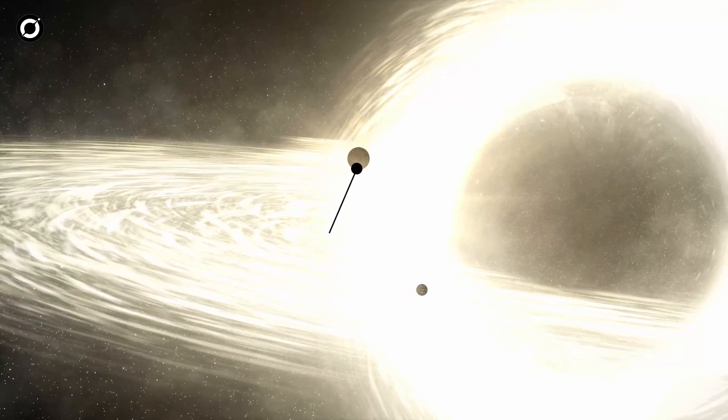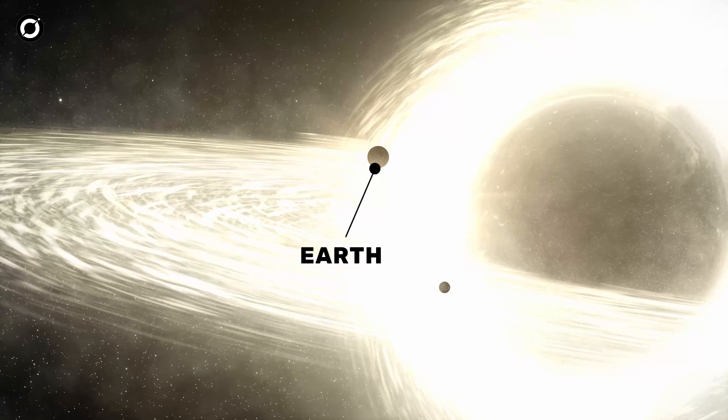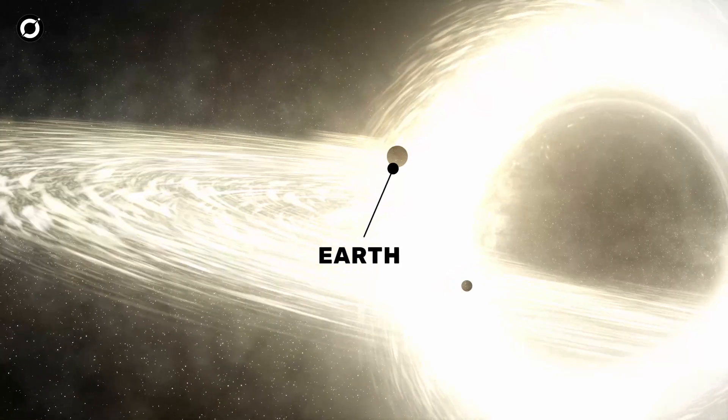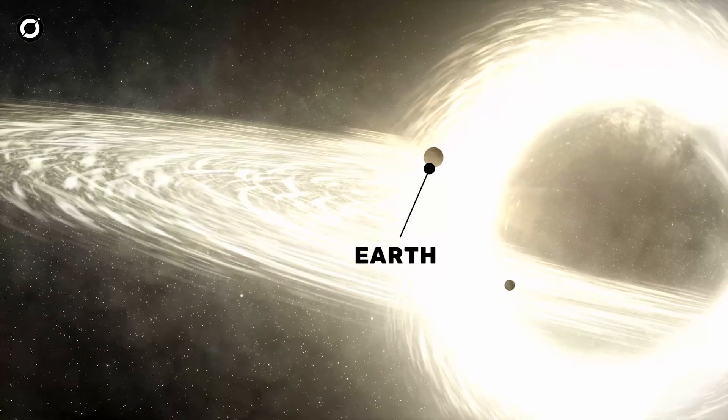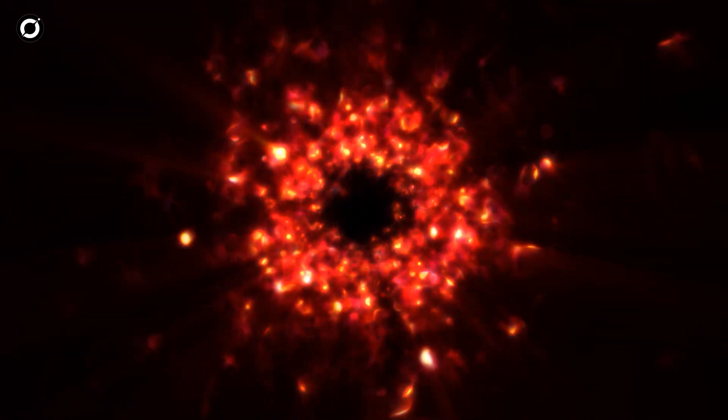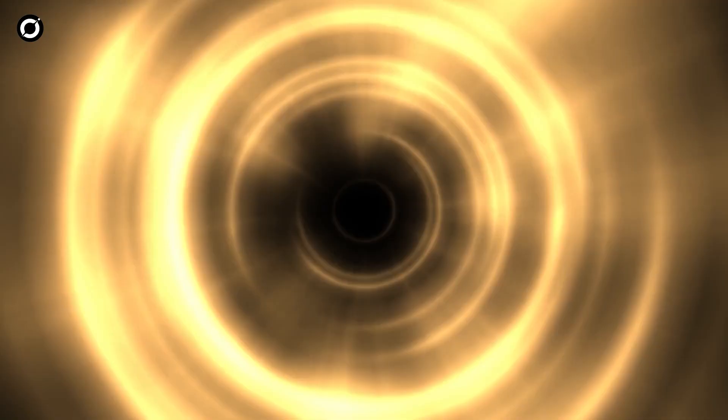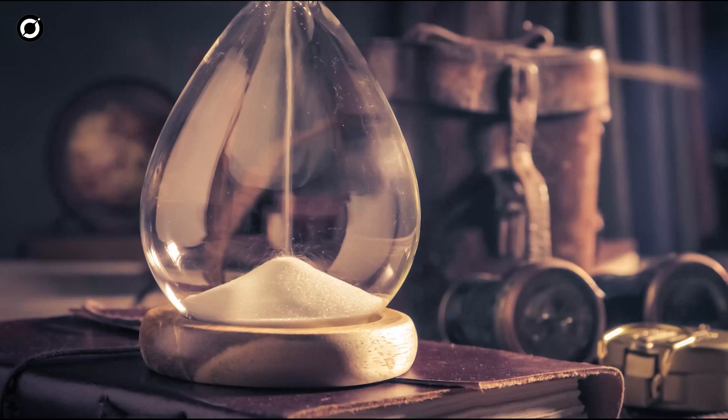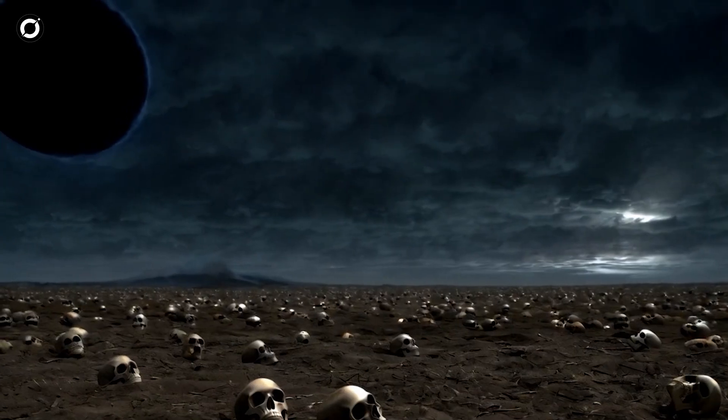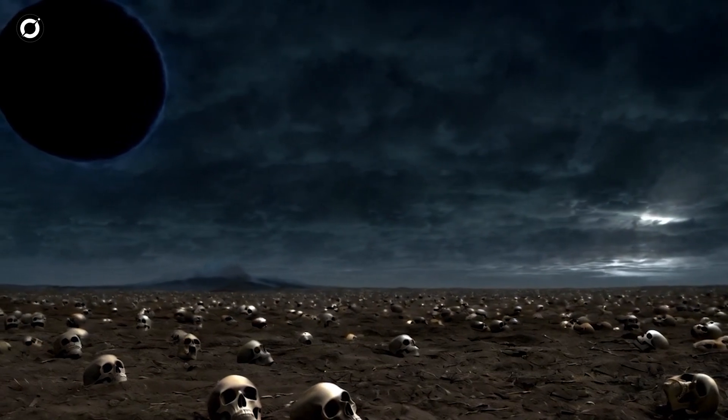If Earth got too close to the black hole, it could pass within the event horizon, the boundary beyond which nothing, not even light, can escape. Once inside this point, Earth would be doomed. All matter, including the planet, would be drawn towards the singularity at the center of the black hole, where it would be crushed into an infinitely small point. As Earth approaches the event horizon, time would appear to slow down dramatically. But no one would survive long enough to witness this.